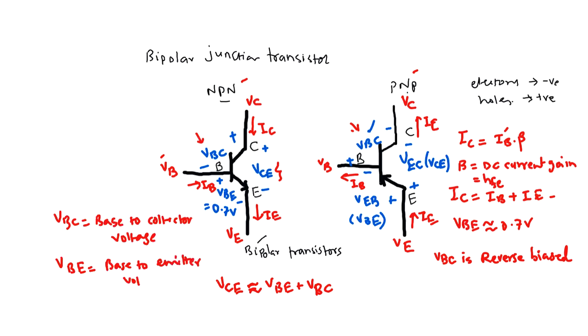Finally, VCE is base to collector voltage. This transistor action helps you to understand the basics of bipolar junction transistor or BJT, and all the currents and voltage terminologies are important in order to work with the BJT. That's it about our working.